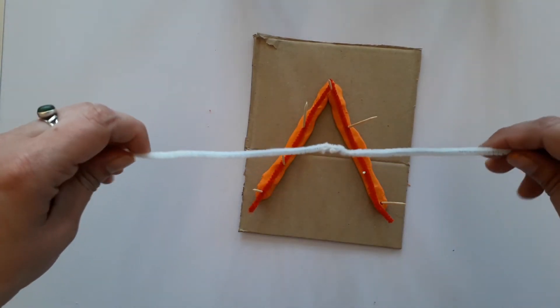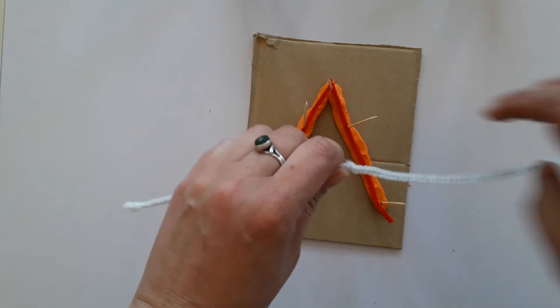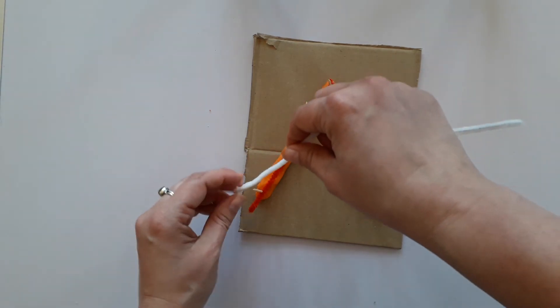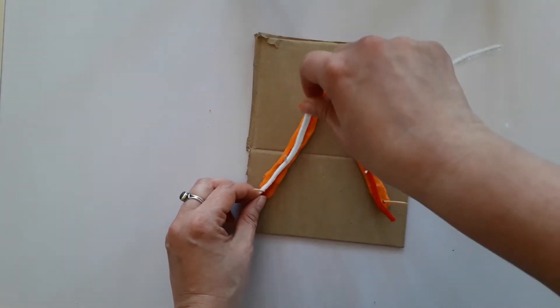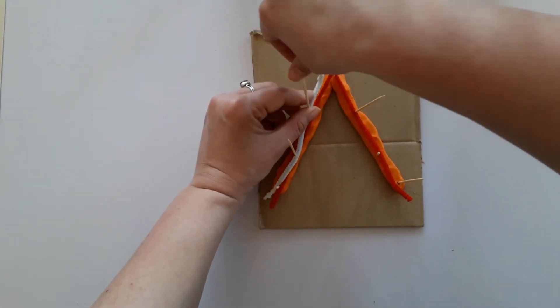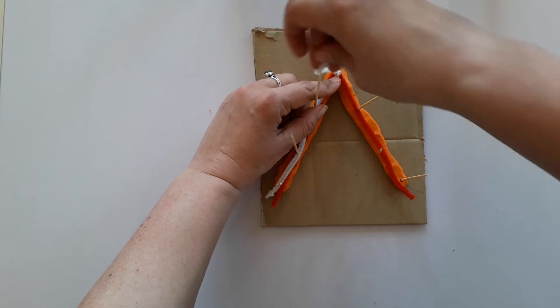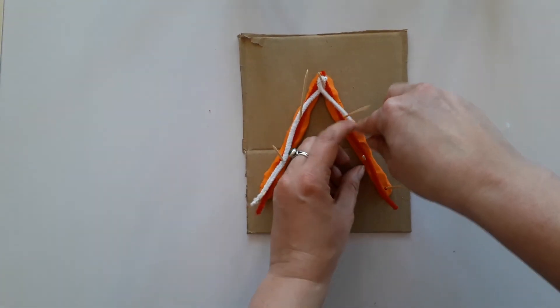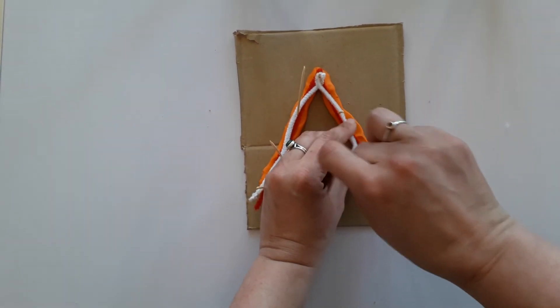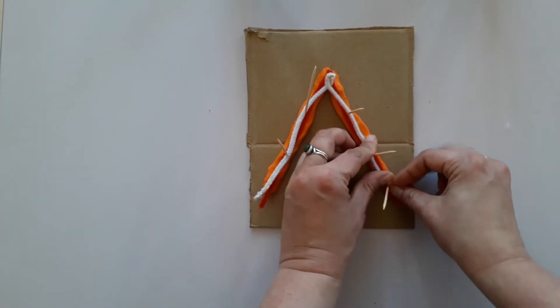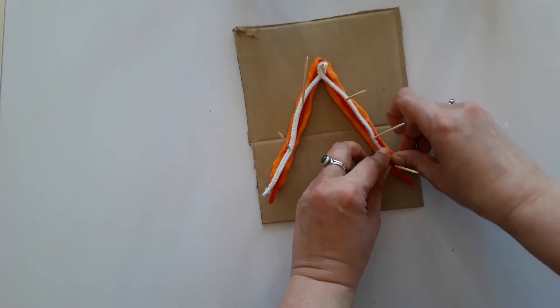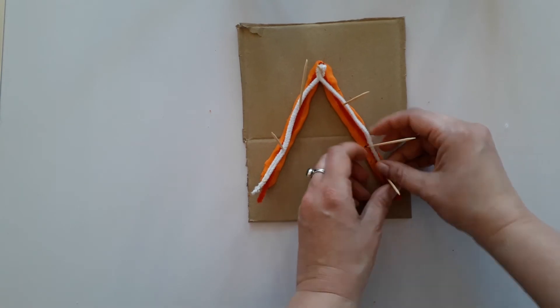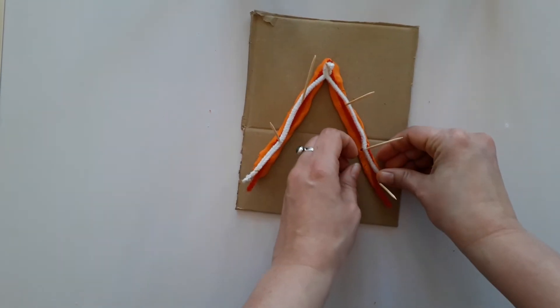But you might find it easier to use a longer one, or as you can see right here I've actually attached two shorter ones together. Now what you do is you do the exact opposite. You go outside, inside, outside, inside, and then you gotta loop it around like this otherwise it won't work. And inside, outside, inside, outside. Don't worry if they start popping up because when you put the next layer on it'll keep them down. This can be a little bit fiddly but it is absolutely worth it in the end.